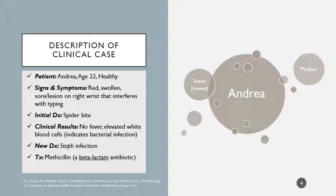The initial diagnosis is that this is a spider bite. There's no fever, but there are elevated white blood cells, which might indicate bacterial infection - especially elevated neutrophil levels indicates bacterial infection. With that information about the differential white blood cell count, there's a new diagnosis of a staph infection. Staph stands for staphylococcus, which is a gram-positive coccus - a gram-positive circle-shaped bacterium. The treatment prescribed is methicillin, a beta-lactam antibiotic, which has traditionally been used to treat many gram-positive infections, especially staphylococcus.